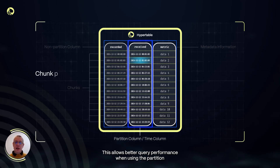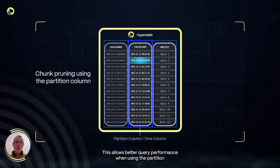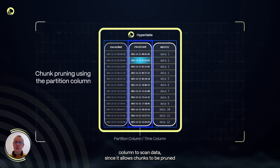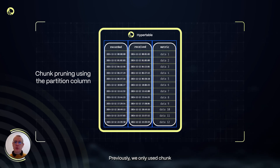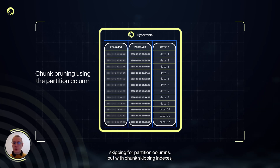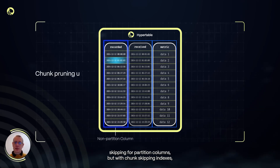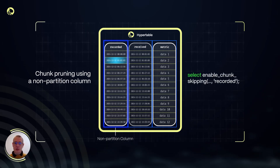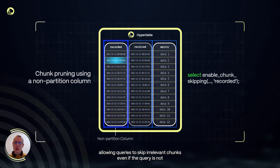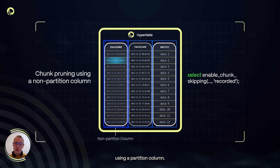This allows better query performance when using the partition column to scan data, since it allows chunks to be pruned early so that less data is scanned. Previously, we only used chunk skipping for partitioned columns. But with chunk skipping indexes, we store the min-max values for non-partitioned columns as well, allowing queries to skip irrelevant chunks even if the query is not using a partitioned column.